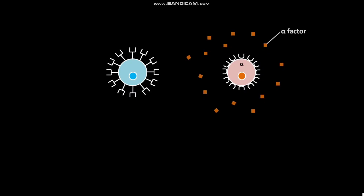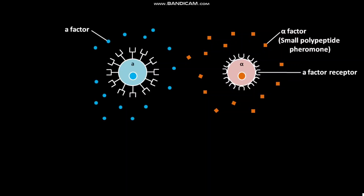The haploid alpha cells produce alpha mating factor and A factor receptor. The alpha mating factor is a small polypeptide pheromone. The haploid A cells produce A factor and alpha factor receptor. The A factor is also a small polypeptide pheromone.